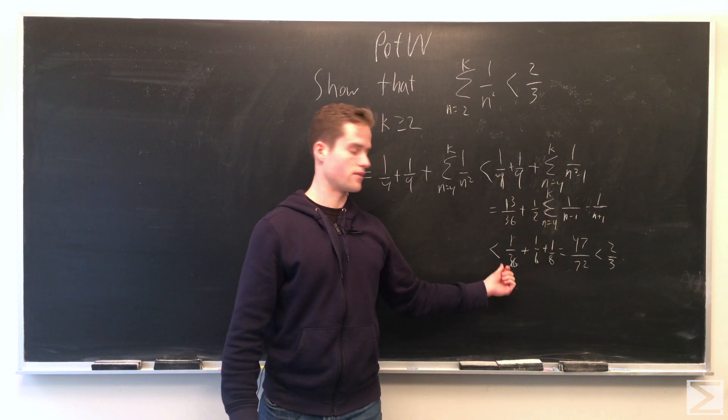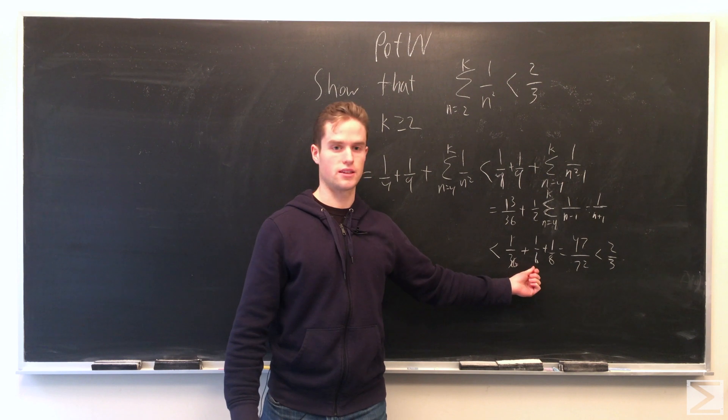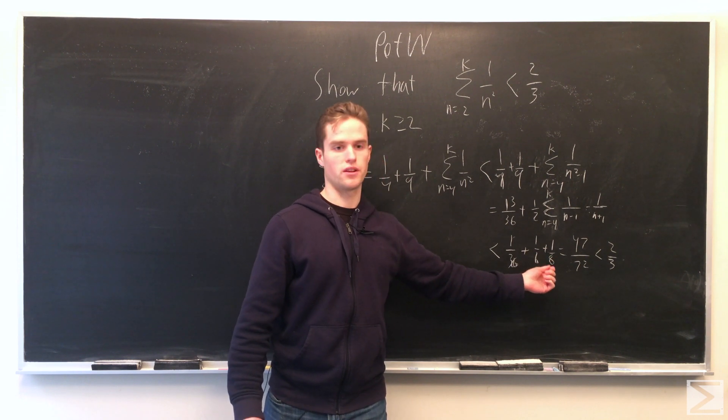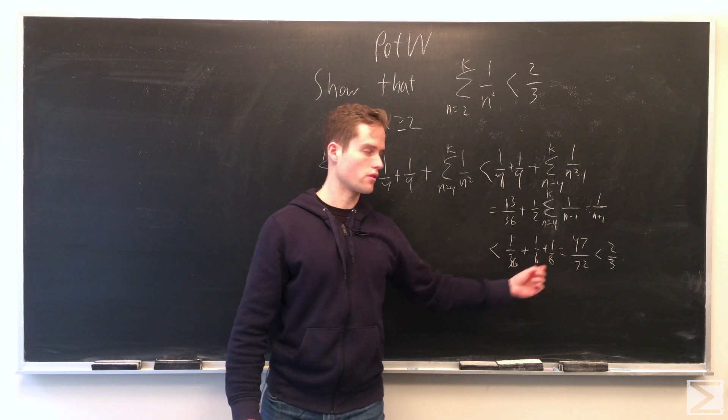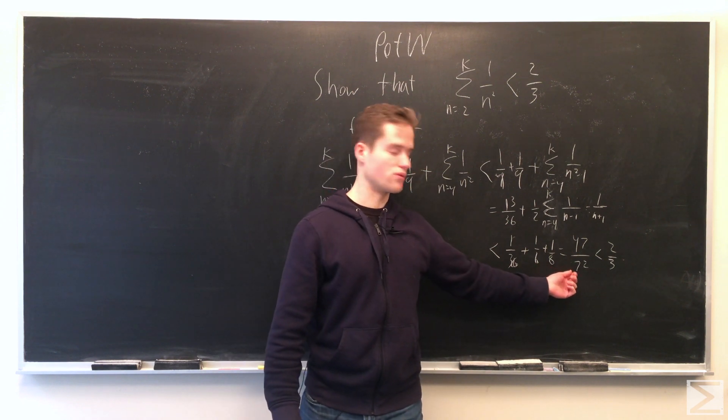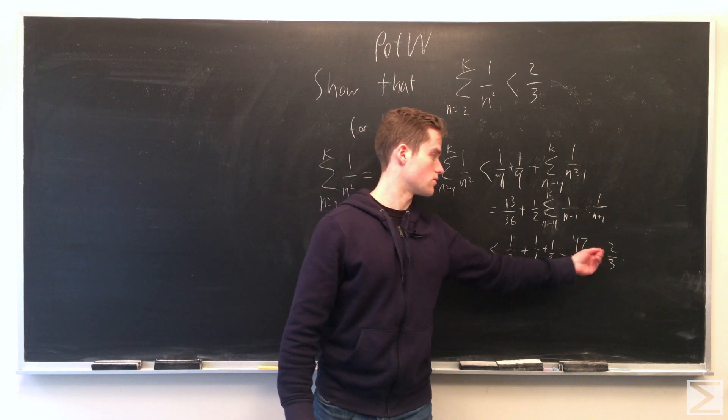So this is strictly less than 1/36 plus 1/6 plus 1/8, which is 1/2 of (1/3 plus 1/4). That's equal to 47 over 72, which is less than 2/3.